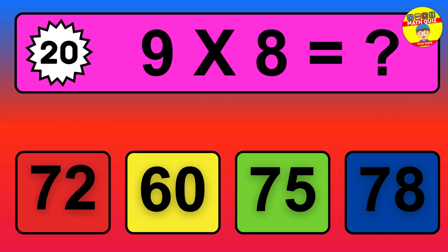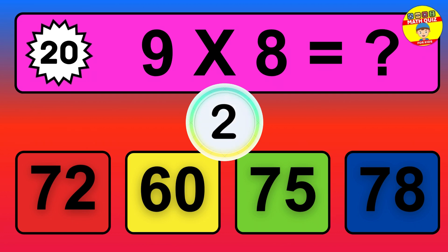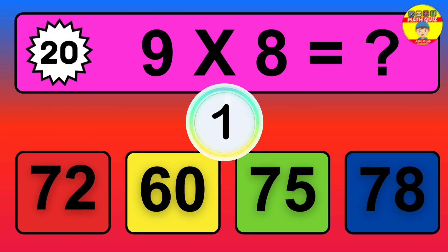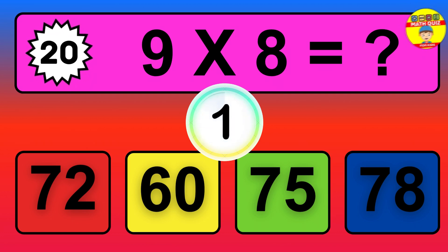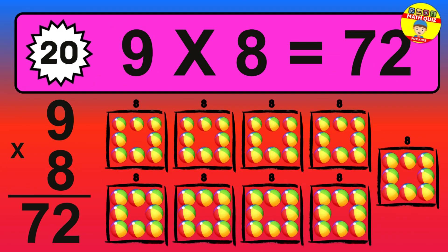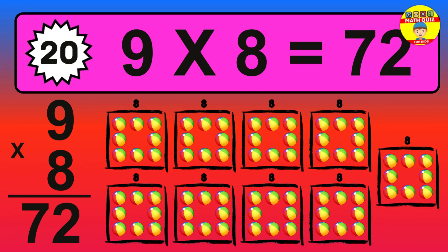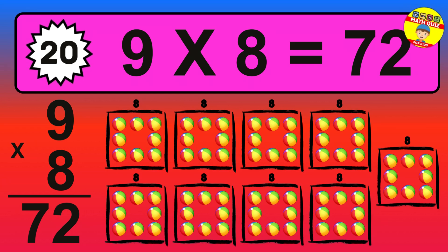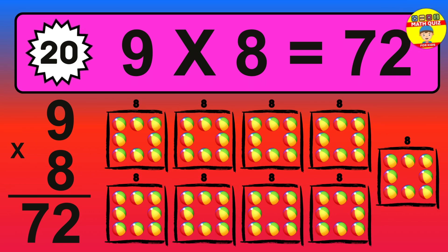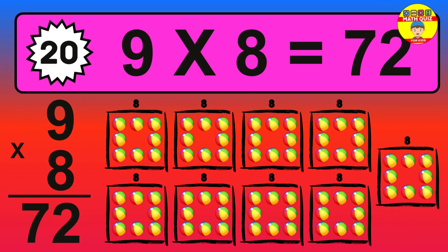Question twenty: nine times eight equals what? The answer is nine times eight is seventy-two. To calculate, we have nine groups with eight balls each one. So how many balls do we have? Seventy-two balls.